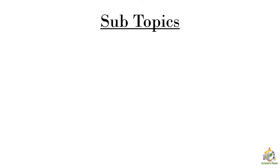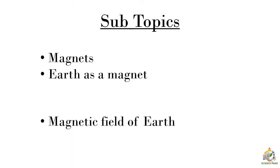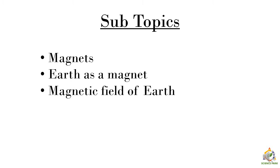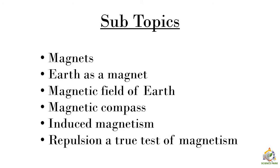So let us see what we are going to learn today. We will revise about magnets and materials that magnets are made of. Then we will see why people say earth is a magnet, the magnetic field of earth, the magnetic compass which is used to find directions, induced magnetism, and why repulsion is a true test of magnetism.